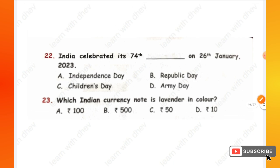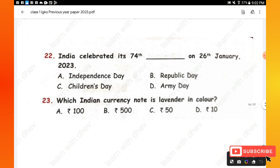Question 22: India celebrated its 74th __ on 26th January 2023. On 26 January we celebrate Republic Day, so India celebrated its 74th Republic Day.